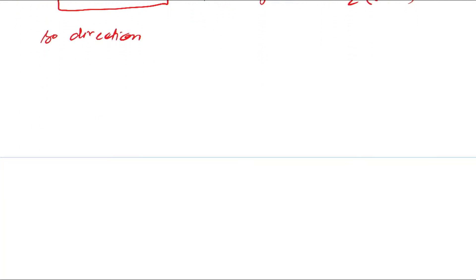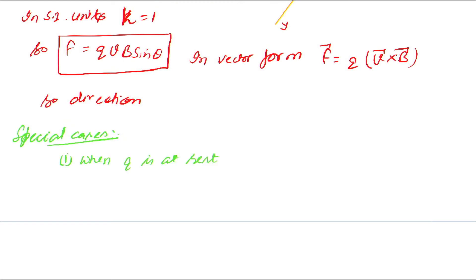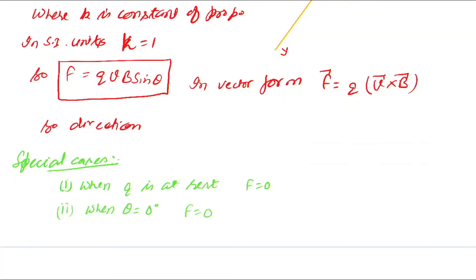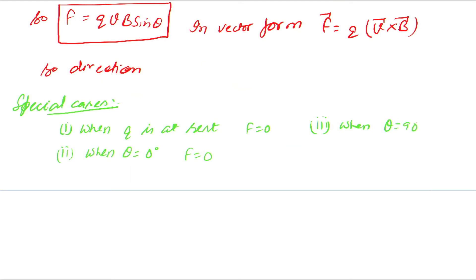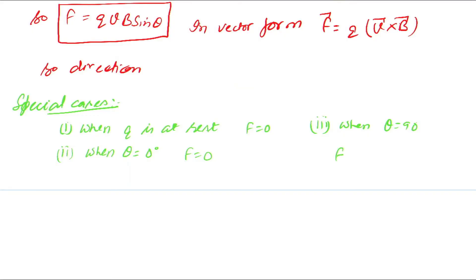Now let's discuss some special cases. First, when the charge is at rest, velocity is zero, so force will also be zero — it experiences no force. Second, when theta equals zero degrees, the charge is moving along the direction of the magnetic field, the angle between them is zero, sin 0 = 0, so no force acts. Third, when theta equals 90 degrees, the charge particle is moving perpendicular to the magnetic field; sin 90 = 1, which is maximum. So the charge particle experiences maximum force f = qVB.